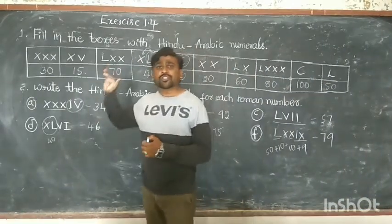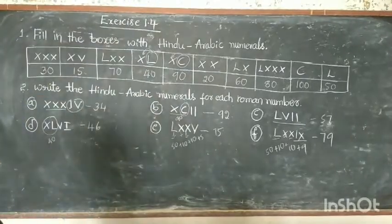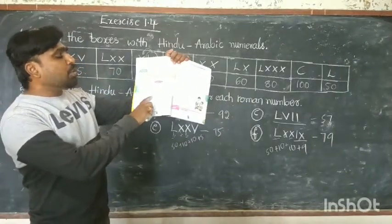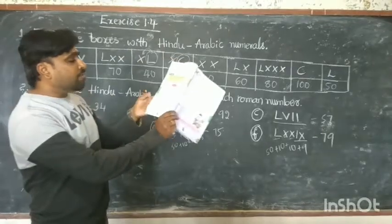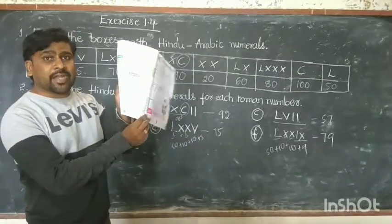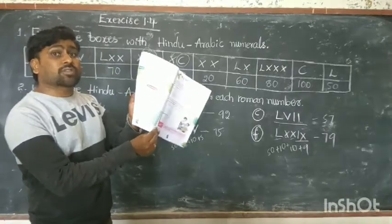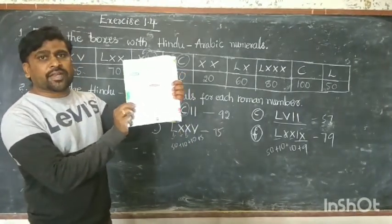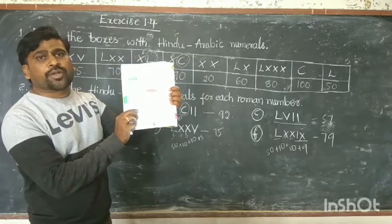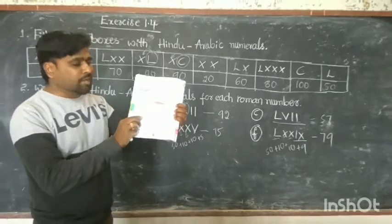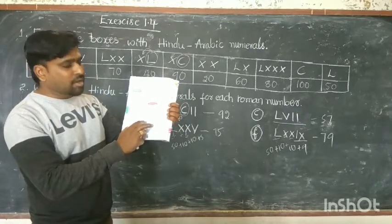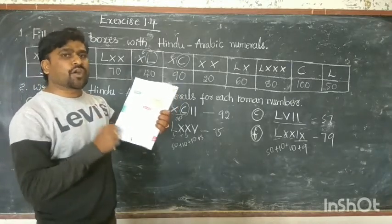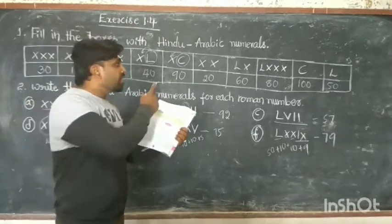This is Exercise 1.4, first part done. The second part: write the Roman numbers for Hindu-Arabic numerals from 41 to 100. They have given some numbers and left blanks — for example, 41 is given, 42 is blank, 43 Roman number, 44 is given, 45, 46 already given, 48 we have to write. Complete this box for homework.